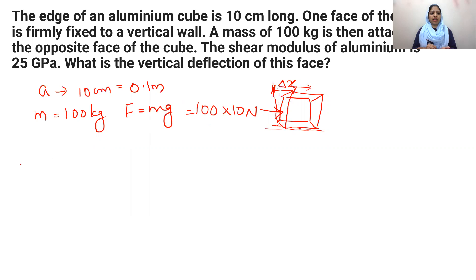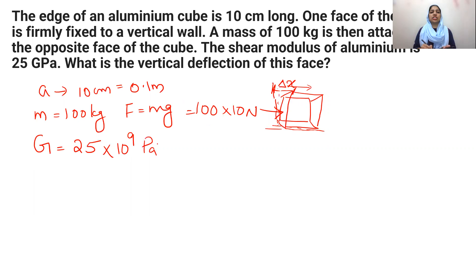Shear modulus, also called rigidity modulus, is represented by capital G. The value of G is 25 giga pascal, that is 25 into 10 raised to 9 pascal. The vertical deflection we need to find is delta x.